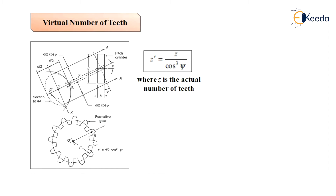The number of teeth z' on this imaginary spur gear is called the virtual number of teeth, and it is given by z' is equal to 2 pi r' divided by pn, which equals 2 pi into (d upon 2 into cos squared psi) divided by pi into mn. So I can write z' is equal to d upon mn into cos squared psi. That gives me the formula for z' as z upon cos cubed psi, where z is the actual number of teeth. Thank you.